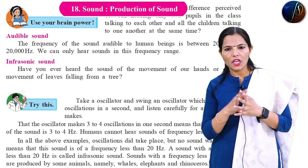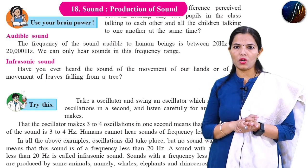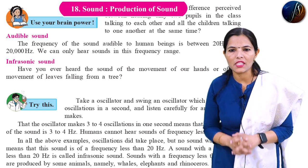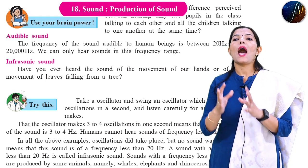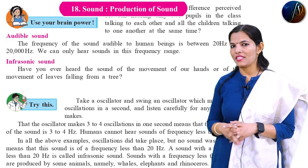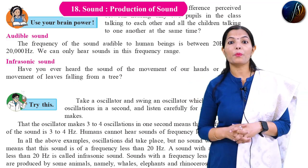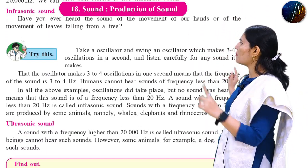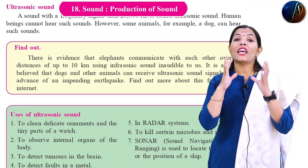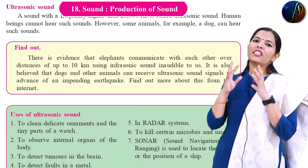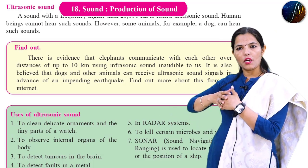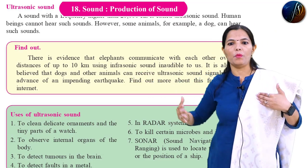Infrasonic sound is produced by special animals like blue whales and rhinos. All these animals produce this type of infrasonic sound. There is evidence that elephants can communicate with each other at a distance of 10 km using infrasonic sound.